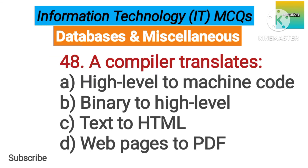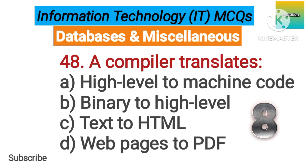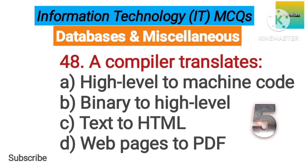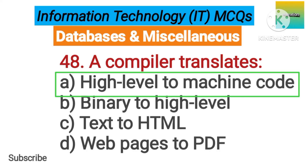Number 48. A compiler translates option A: High level to machine code. B: Binary to high level. C: Text to HTML. D: Web pages to PDF. The correct answer is option A, high level to machine code.